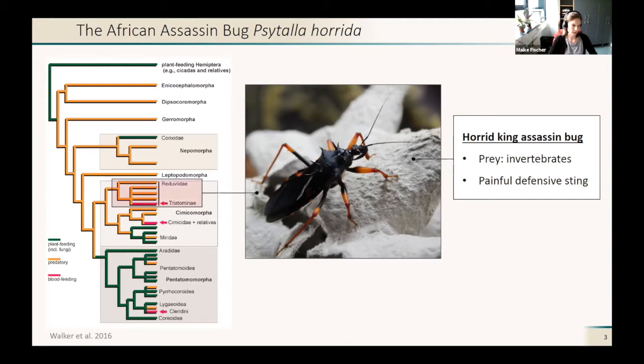Psythala horida is a Reduviidae, which is a group of mainly predatory heteroptera, except for the Triatominea which are blood feeding.